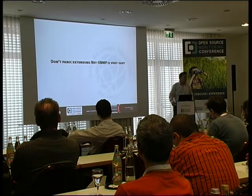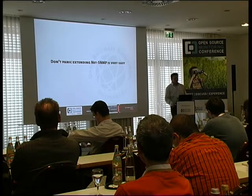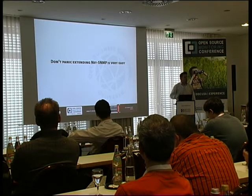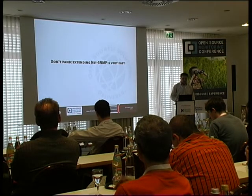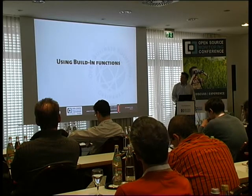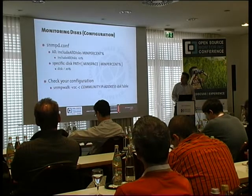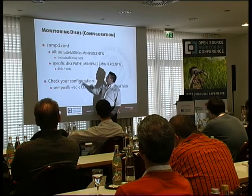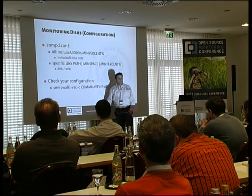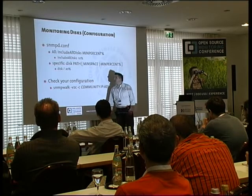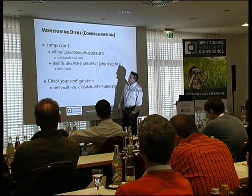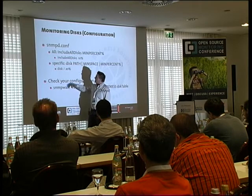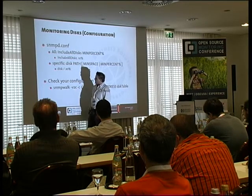Don't panic — extending the NetSNMP agent is very easy. It's only one line and then you have the complete function with NetSNMP. The first topic is to use the built-in functions. The first one we need to configure in snmpd.conf — you can define include all discs with 10% threshold. Then you will have monitoring over all your discs at 10%. You can also define a special value — for example, if you say root should be 20%, you can override the default setting and have different values per partition.